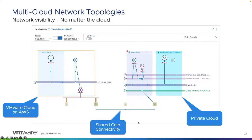We can also map out multi-cloud network topologies. Here I'm looking at a path between a source and destination IP in a VMC on AWS environment. I can see my source virtual machine, distributed firewall, layer 2 segment, tier 1 and tier 0 router, direct connect, and the underlying devices going across to our shared colo connectivity. When it arrives in the colo, it uses two different hosts — one as an edge host with NSX-T — hitting my tier 0, using NAT, going through the firewall, hitting my tier 1 router, then routing over the segment to my destination host and virtual machine.